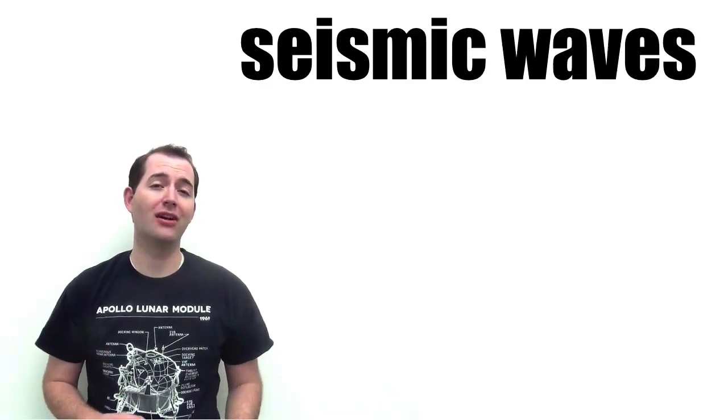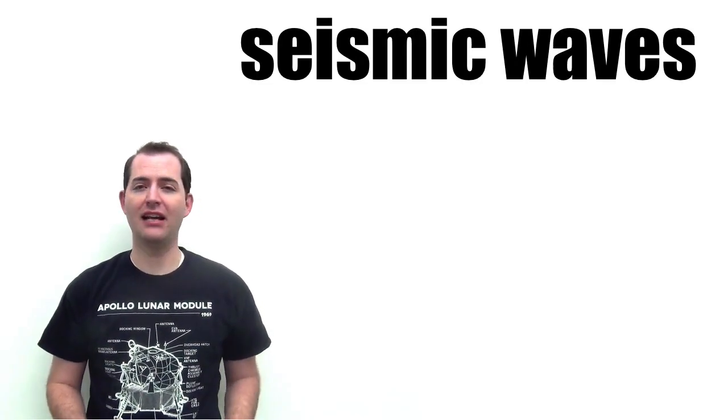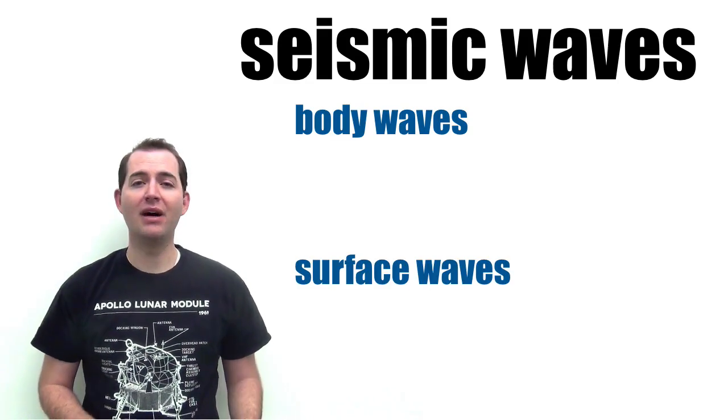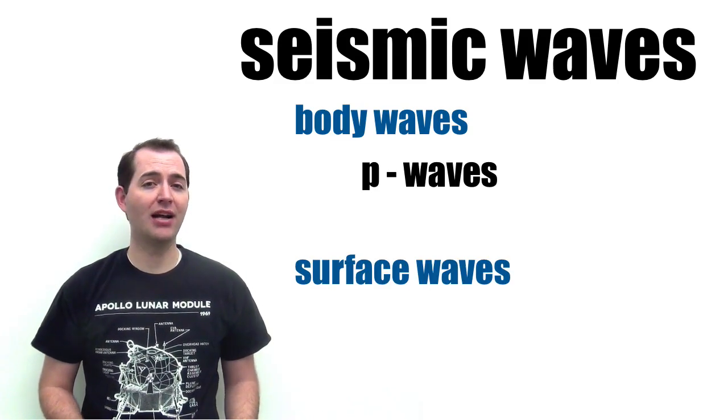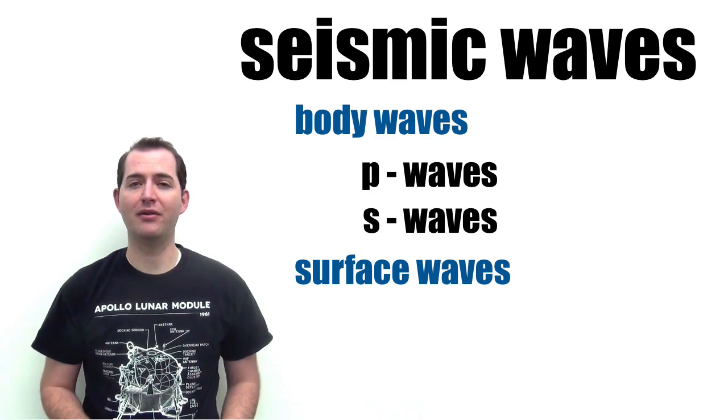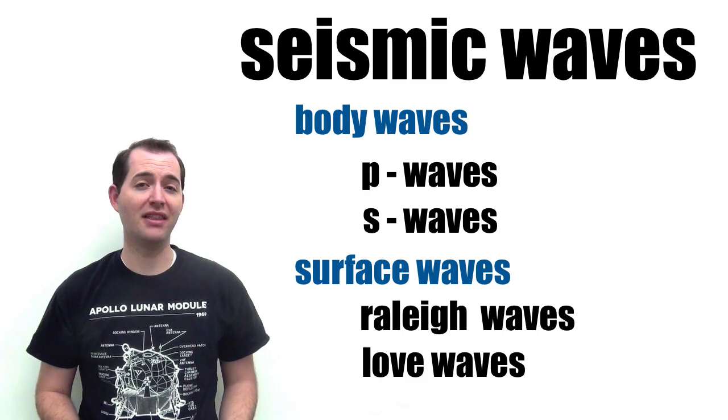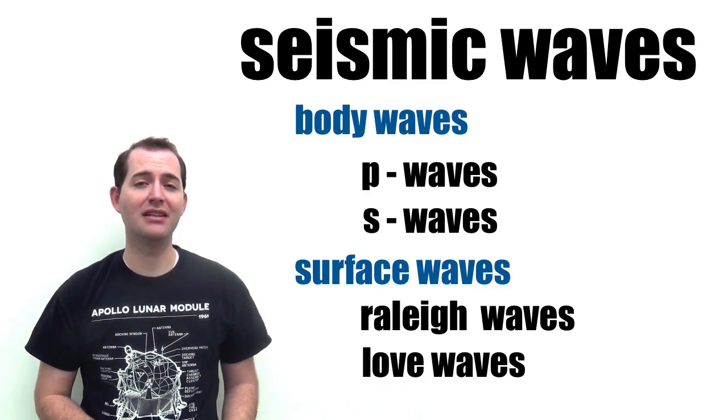There are two main categories of earthquake waves or seismic waves. These categories are body waves and surface waves. Body waves include P or primary waves and S or secondary waves. Surface waves include Raleigh and Love waves, but these will not be discussed in any more detail here.